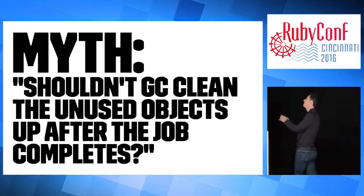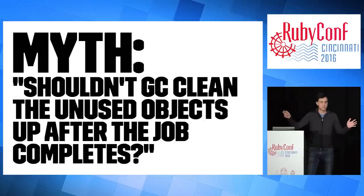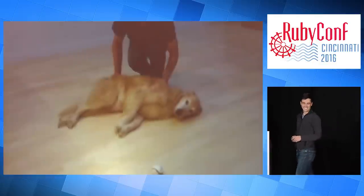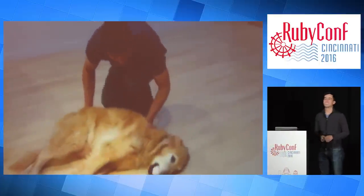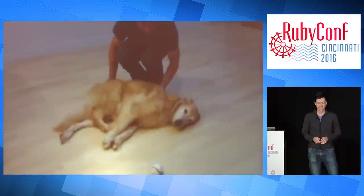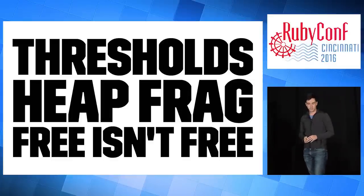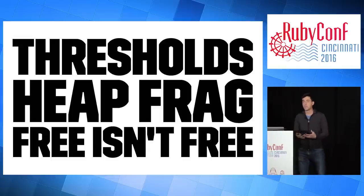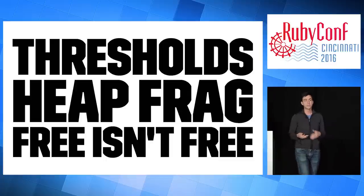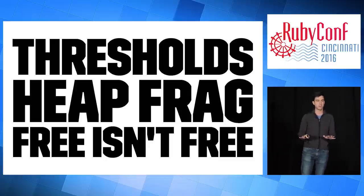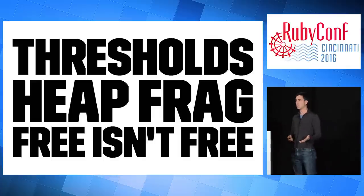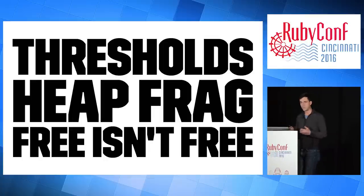The myth: shouldn't the GC just clean up all our unused objects after our job or action completes, and memory goes down? No. Garbage collection is very lazy. It doesn't work based on timers — it works based on thresholds. There are various thresholds in the Ruby VM that trigger GC. It's not something that just runs constantly in the background, at least not the part that you care about. The sweeping phase of GC — the phase that actually frees objects — runs based on these thresholds.